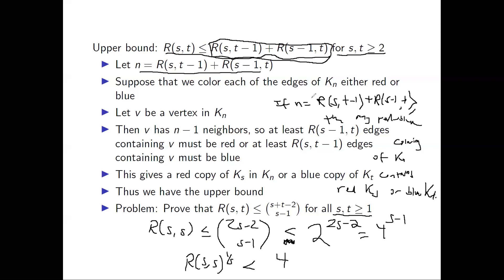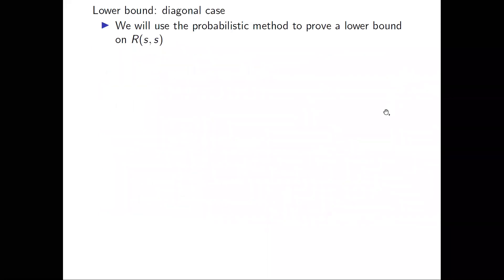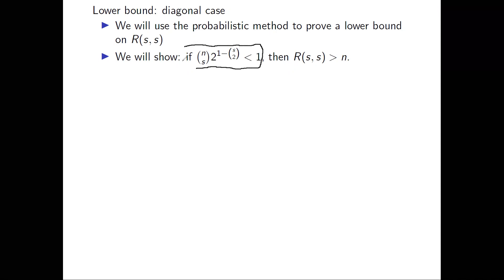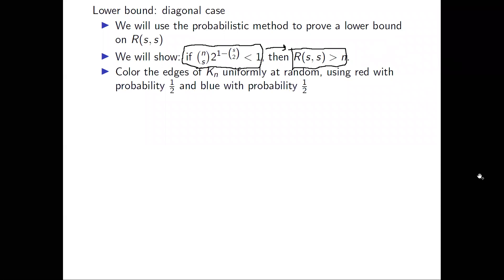Now we're going to move on to the lower bound. For the lower bound, we're also going to prove an exponential lower bound where the base of the exponent is greater than one. What we're going to show is this result: if C(N, s) · 2^(1 - C(s,2)) is less than one, then the Ramsey number R(s, s) must be greater than N. We'll use the union bound to prove that.